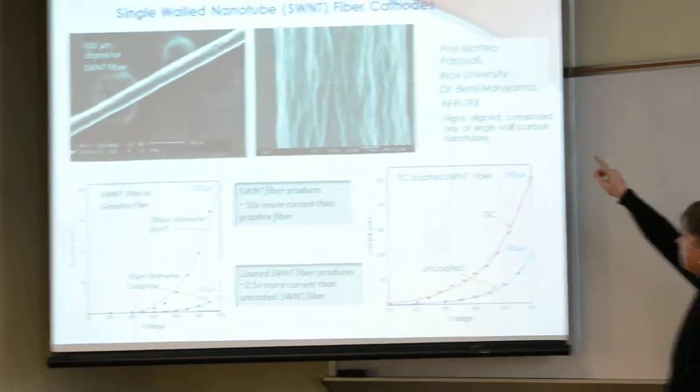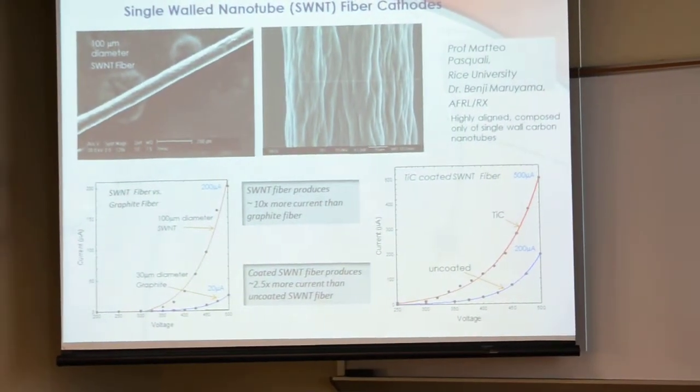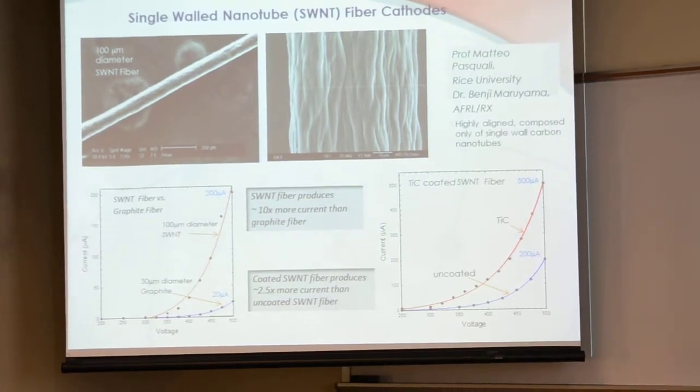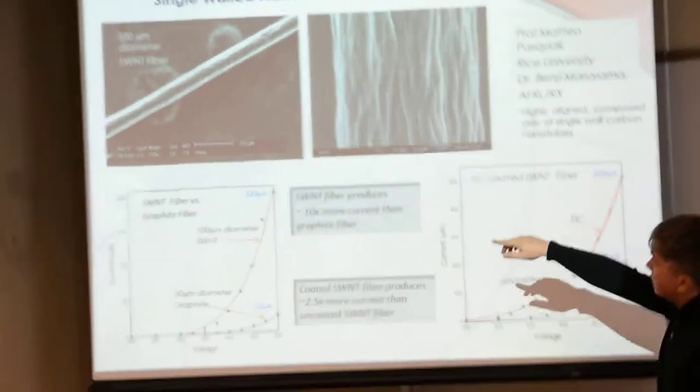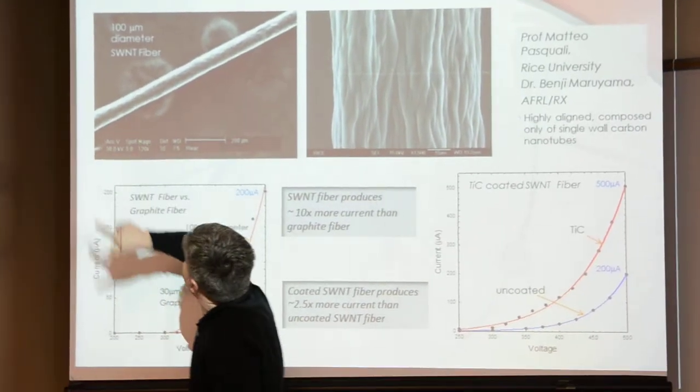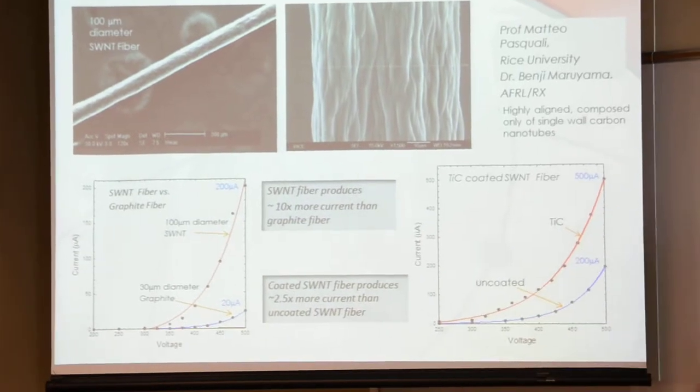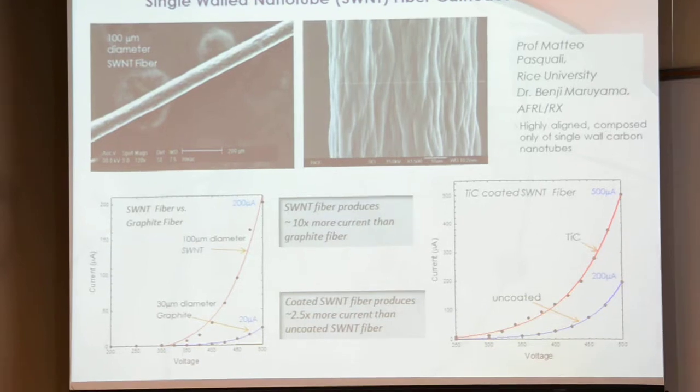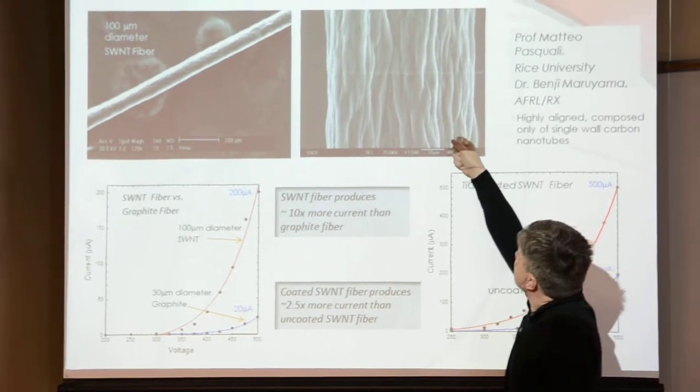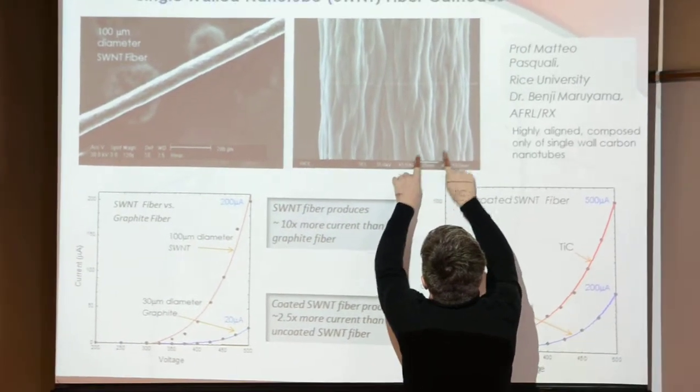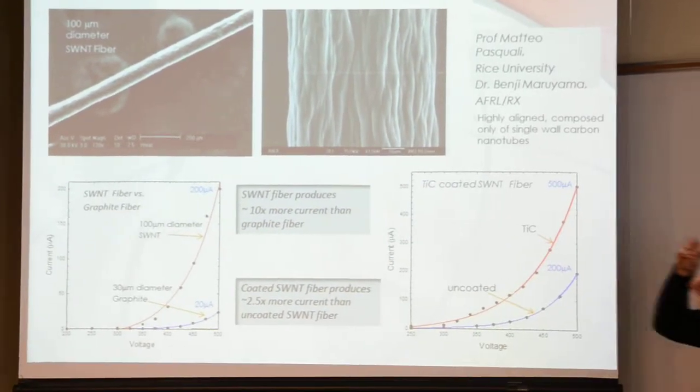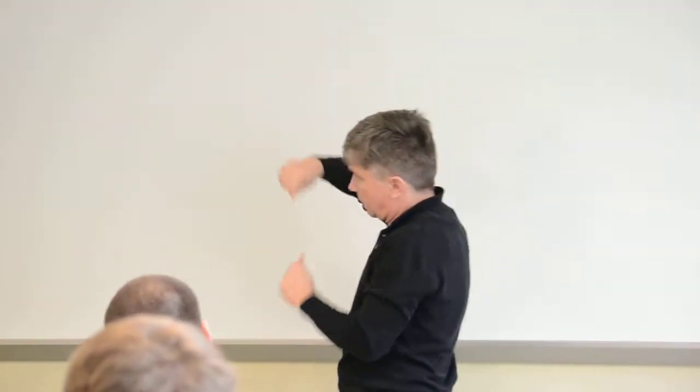If you look at that fiber closer, it depends where you get it from. We had three sources: Dr. Pasquali at Rice University, some from England, or Dr. Shanov here. It looks kind of like a wire, about 100 microns diameter. If you look closer, it's not solid, it's bundles of nanotubes. This is a bundle, about 10 microns. Inside are individual nanotubes, nanometer size, forming twisted bundles.